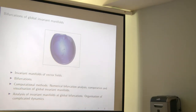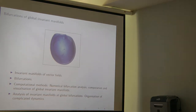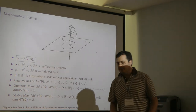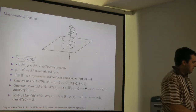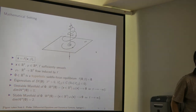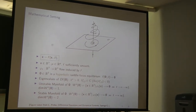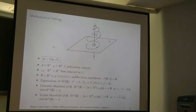Basically, we would like to know the organization of global phase space in different scenarios. We will work with a vector field f that depends on parameters, in a three-dimensional phase space. We could have a vector of parameters, and the vector field is going to be sufficiently smooth as needed.